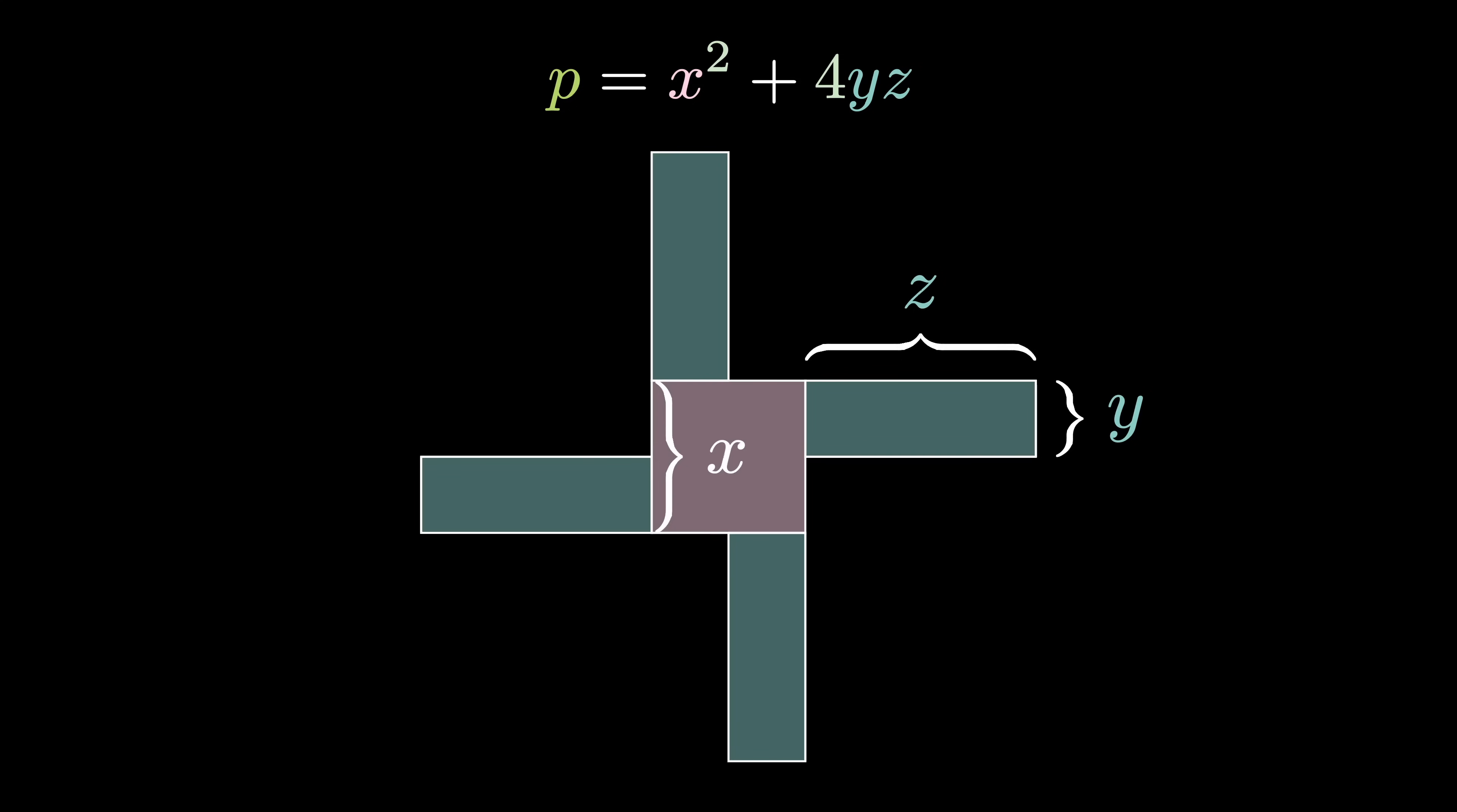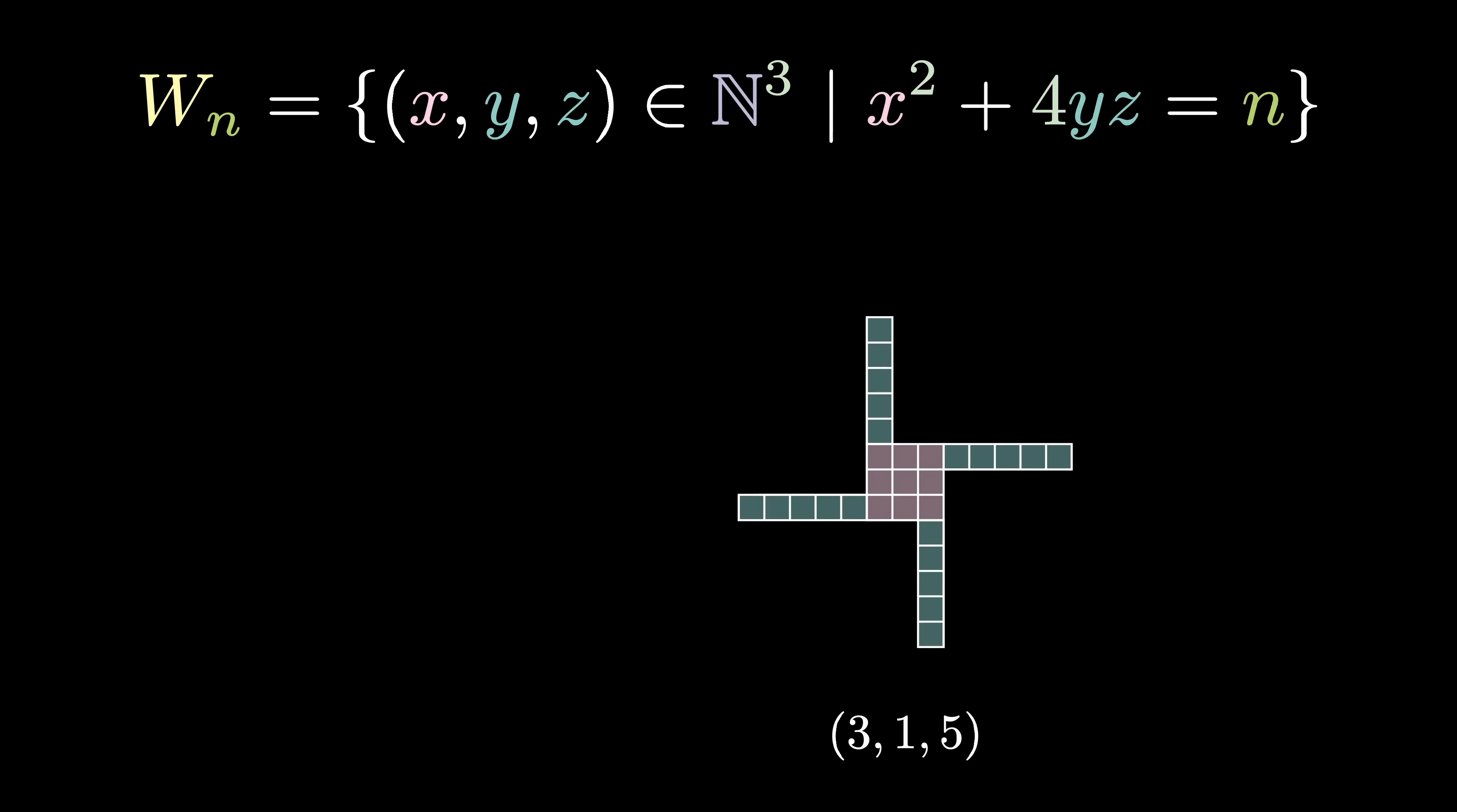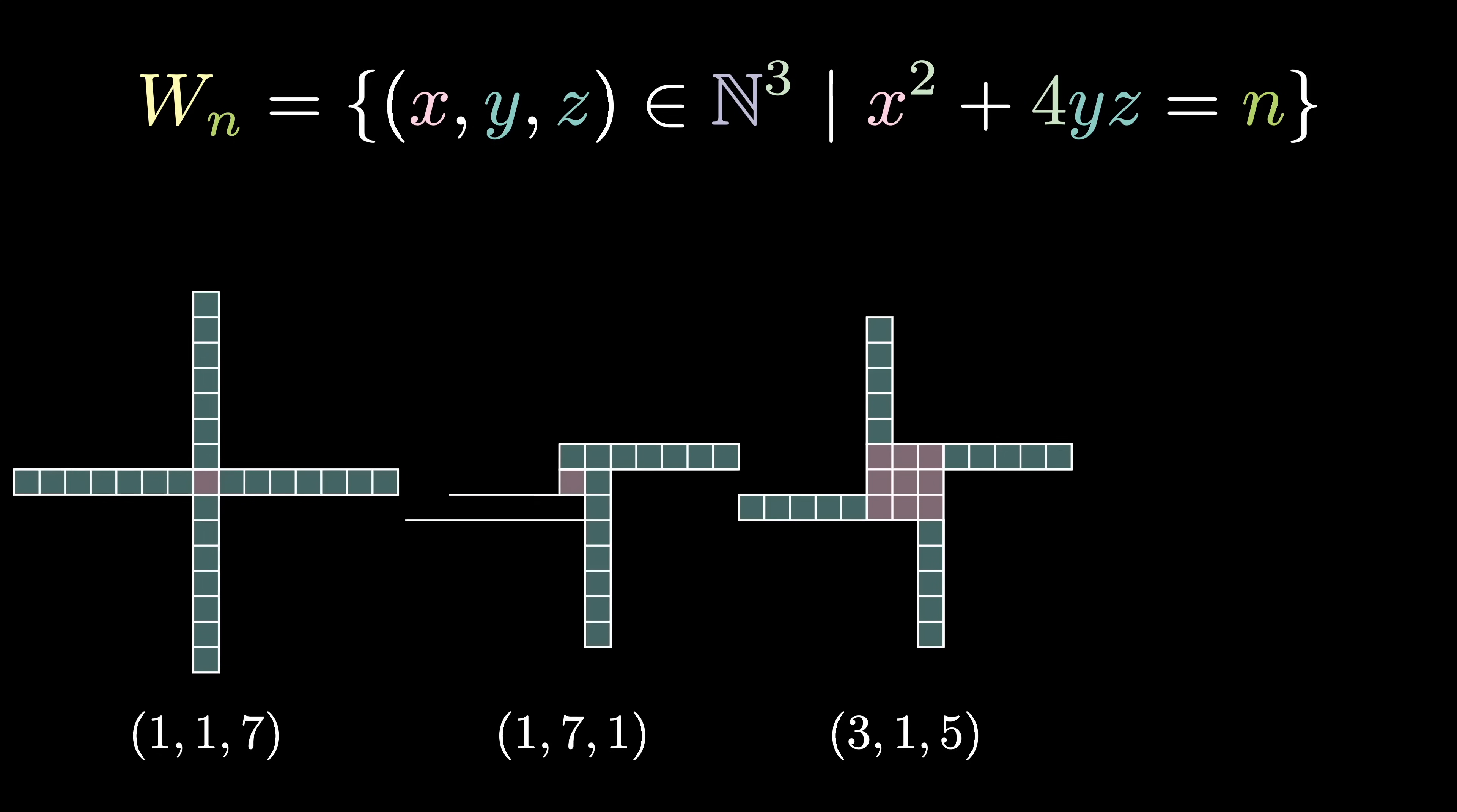Let's boil down exactly what I'm saying. Consider a number n. The set of windmills of n, W_n, is defined as the set of all triples (x,y,z) where x, y, and z are all natural numbers such that n = x² + 4yz. For instance, for the number 29, (3,1,5) forms a windmill since 29 = 3² + 4×1×5.